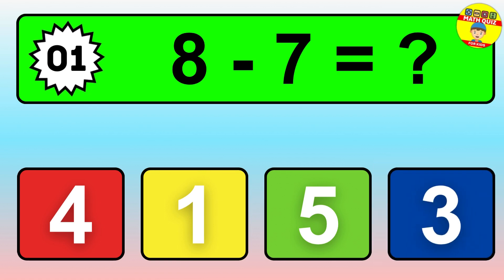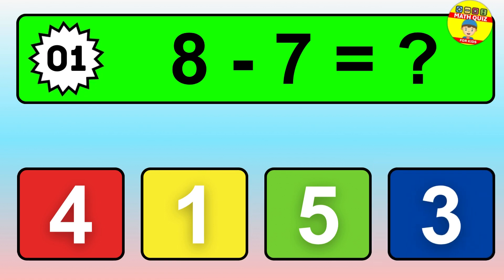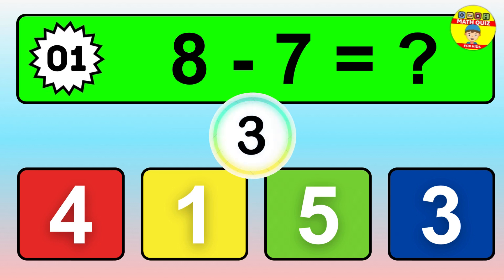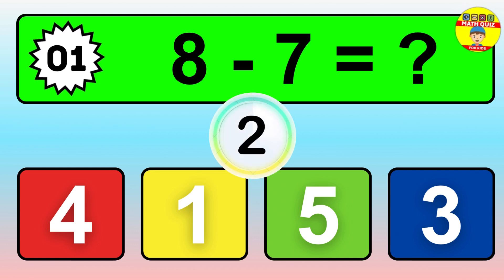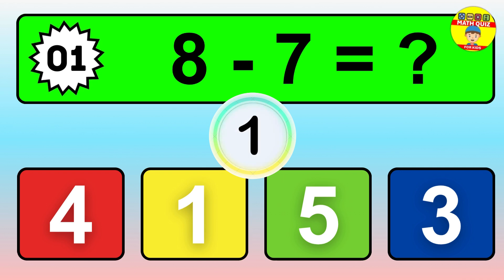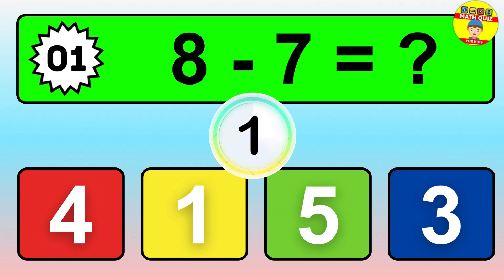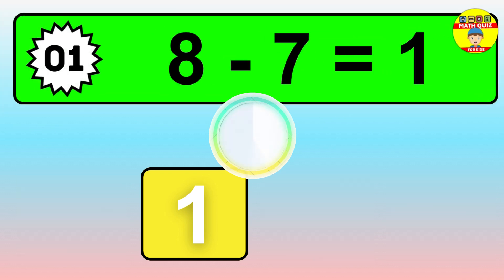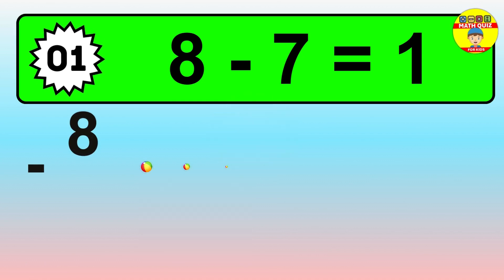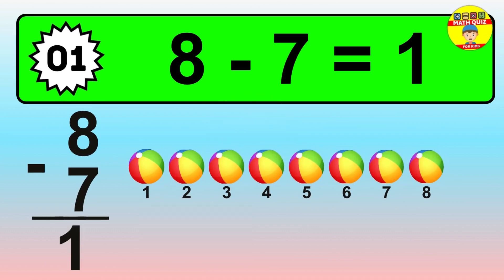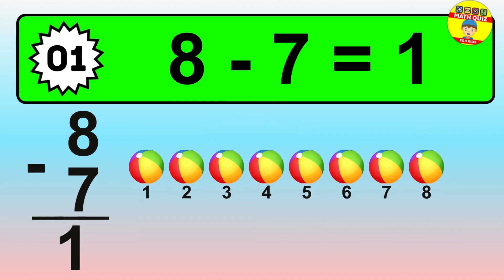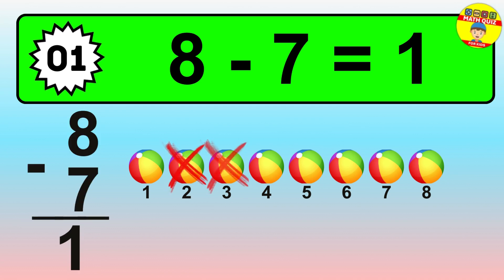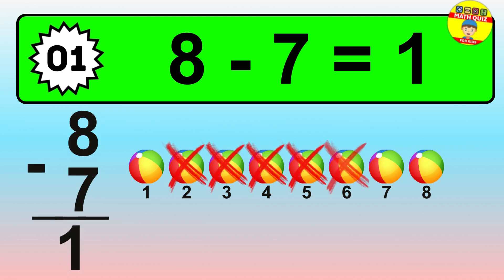Question one: eight minus seven equals what? So the answer is eight minus seven is one. Let's count it: one.